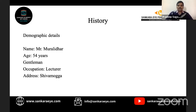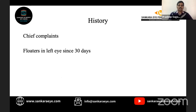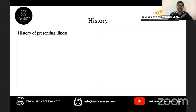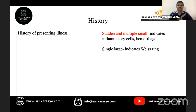We usually begin with a history. In this case, it's a 54-year-old gentleman, Mr. Muradidar, who is a lecturer by occupation, a resident of Shimoga, who presented with the chief complaint of floaters in his left eye since 30 days. When you get this chief complaint, we elaborate in the history of presenting illness. We should first understand what a floater is — an opacity in the vitreous which is moving. We need to know what kind of floater it can be.